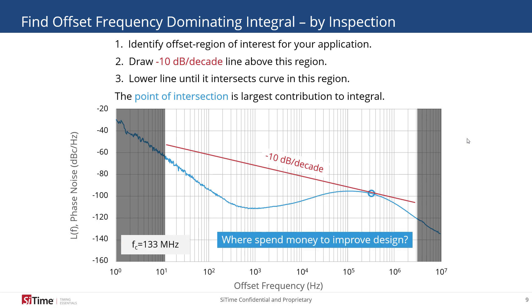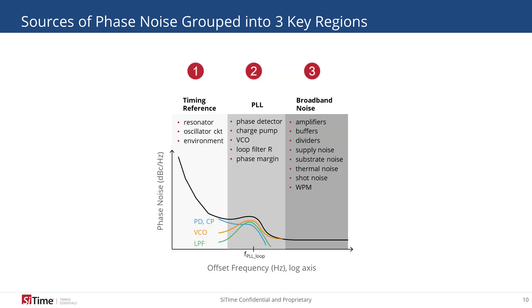So if we want to spend money to improve the design, where do we spend it? Looking at the noise processes in this curve, we've identified the dominant noise source to be the phase lock loop. Therefore, improving the other areas such as the oscillation circuitry and the noise floor won't have any impact.